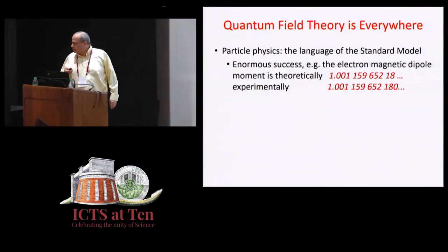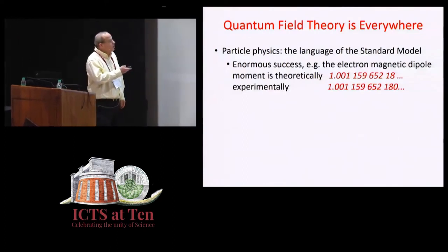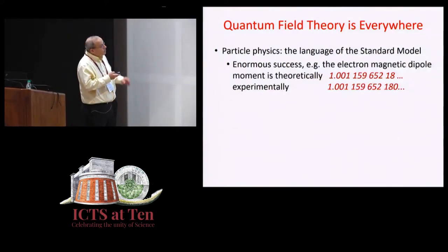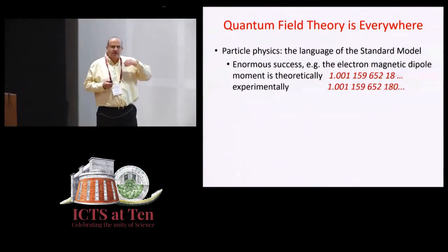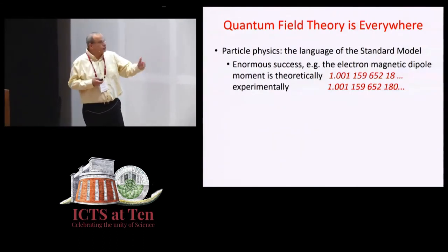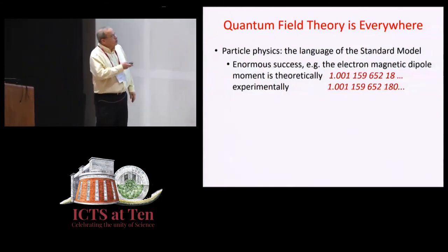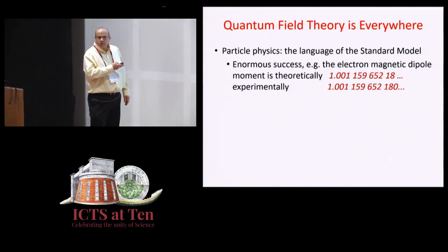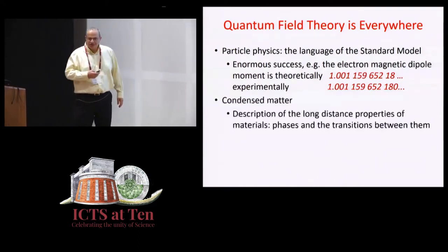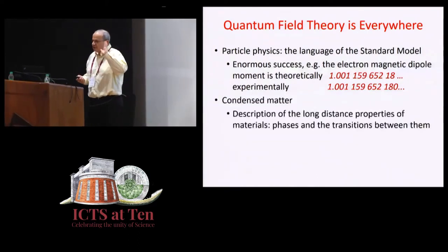And there are two lessons to draw from that. First of all, it really means that we know what we're doing. We really know what we're doing because every digit here probes some other aspects of our understanding: quantum mechanics, special relativity, the weak force, the strong force, and so forth. The second lesson from here, which agrees with David's talk this morning, is that the experimentalists are better than the theorists. They have one more significant digit than we have, and there's still a long way to go.